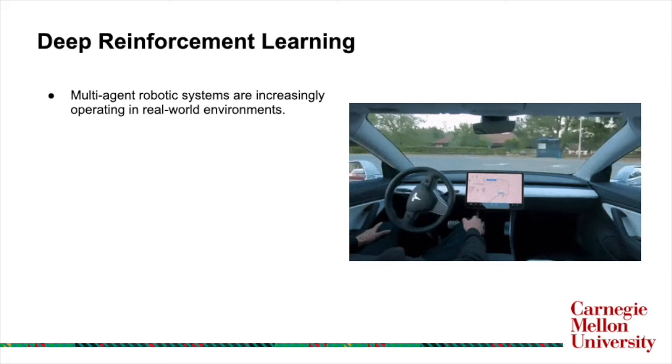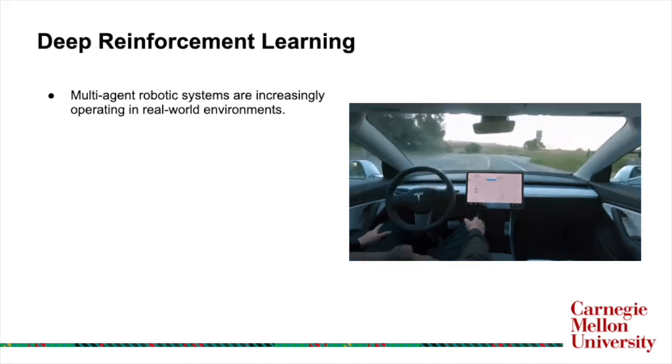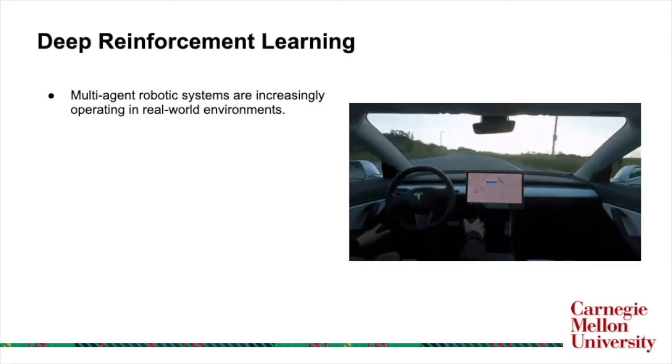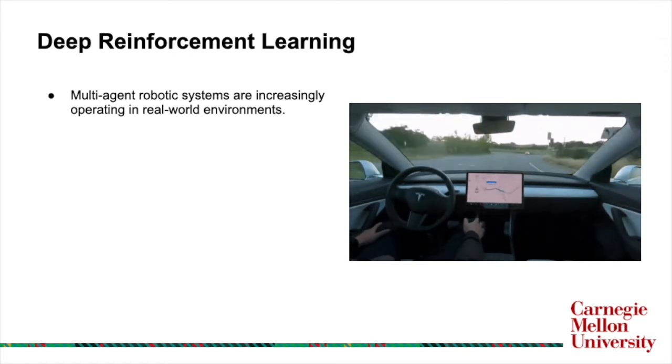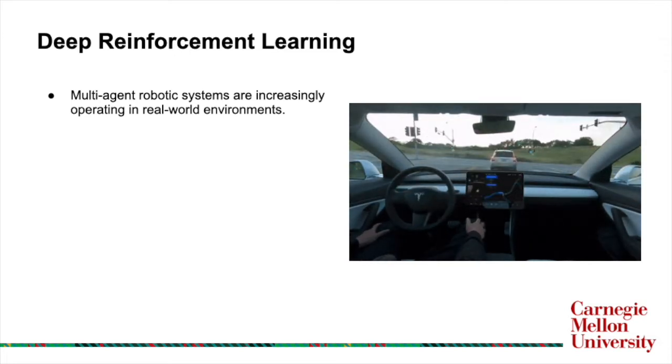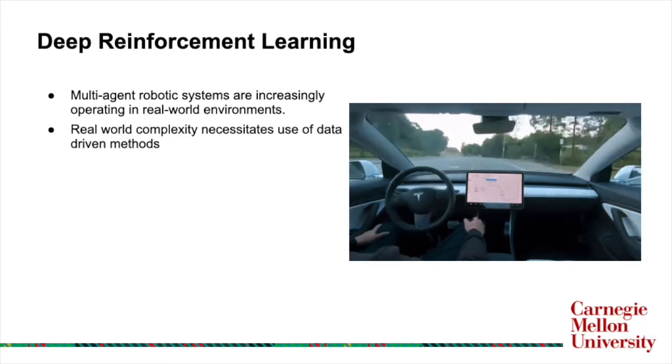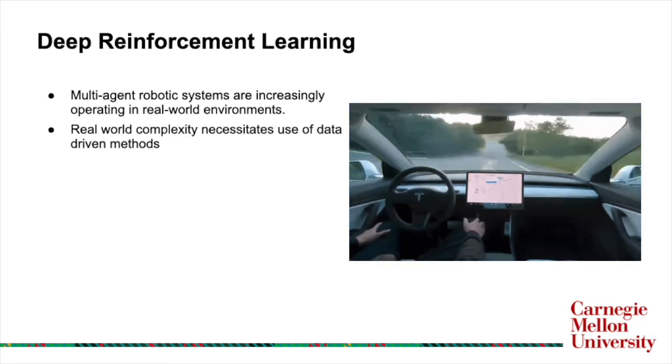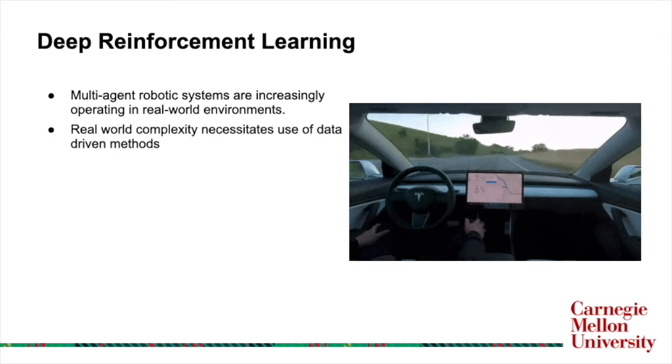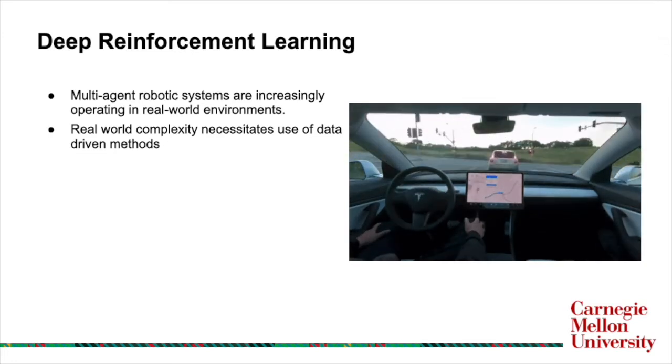With burgeoning adoption in fields such as autonomous driving, service robotics, and healthcare, multi-agent robotic systems are increasingly operating in real-world environments. State-of-the-art multi-agent systems are often controlled by deep neural network models trained with reinforcement learning techniques, which is necessitated by the complexity of the real world.